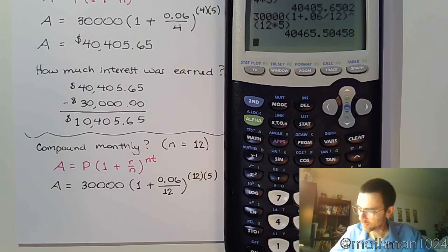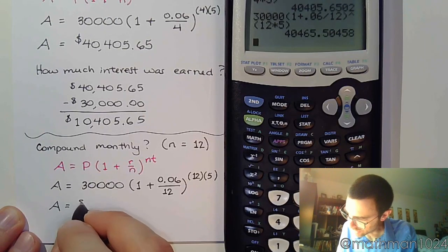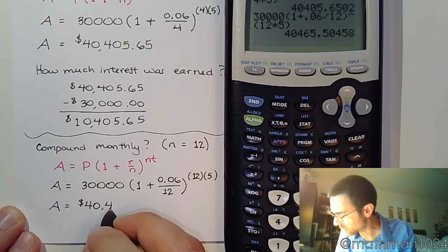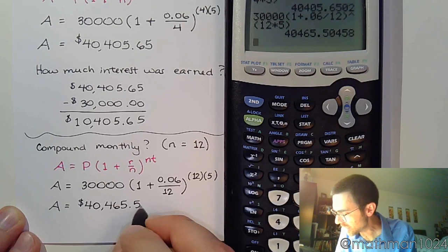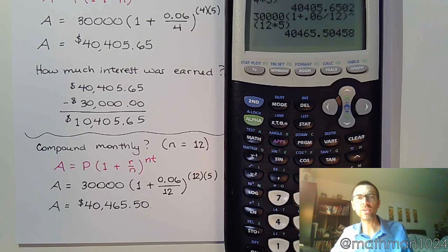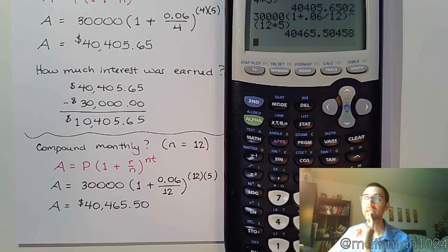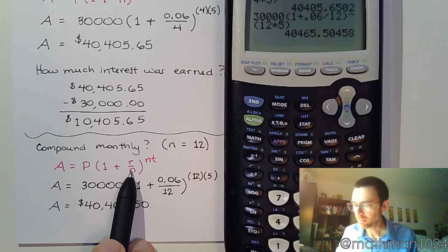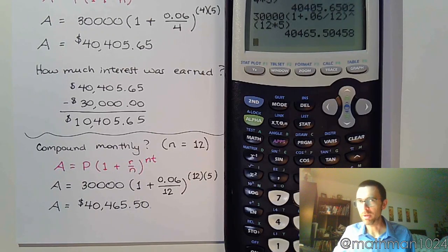Entering that into the calculator, our final amount is forty thousand four hundred sixty-five dollars and fifty cents — about sixty dollars more than with quarterly compounding. You might wonder what happens if you compound daily or every minute. The more times you compound, the smaller each increment gets, but you do earn more money. However, there is a limit to this, and we'll explore that in a couple of videos.